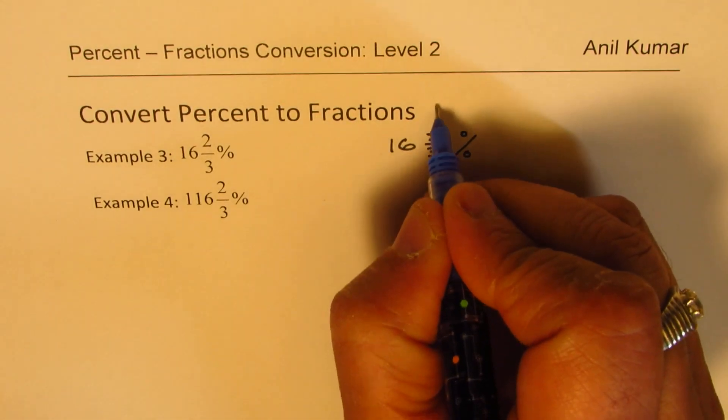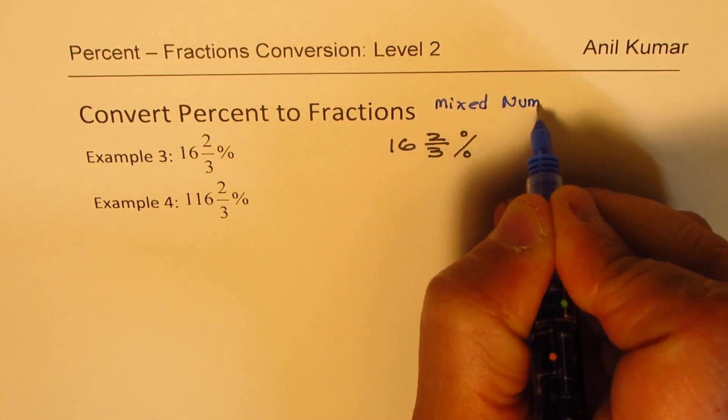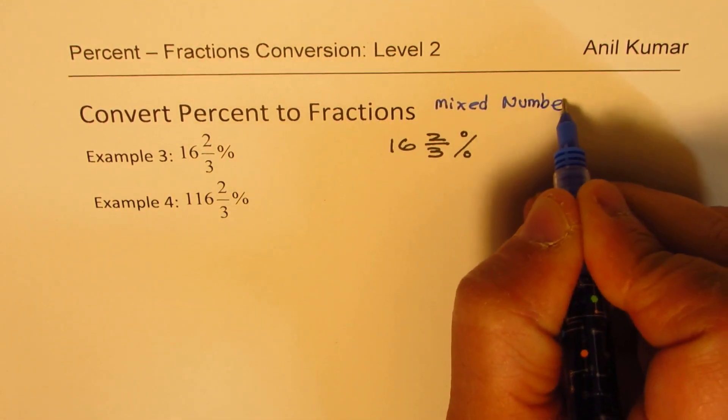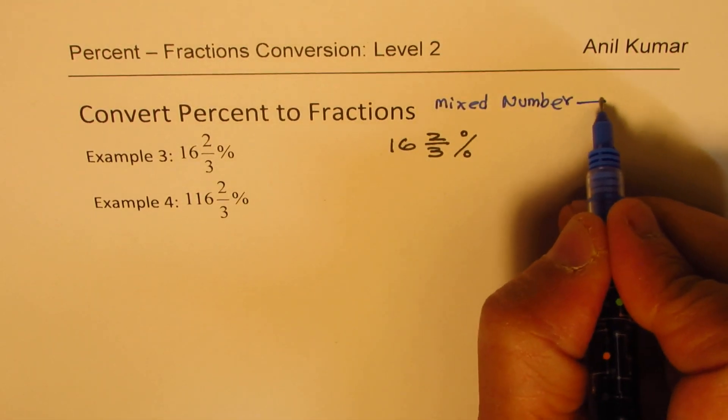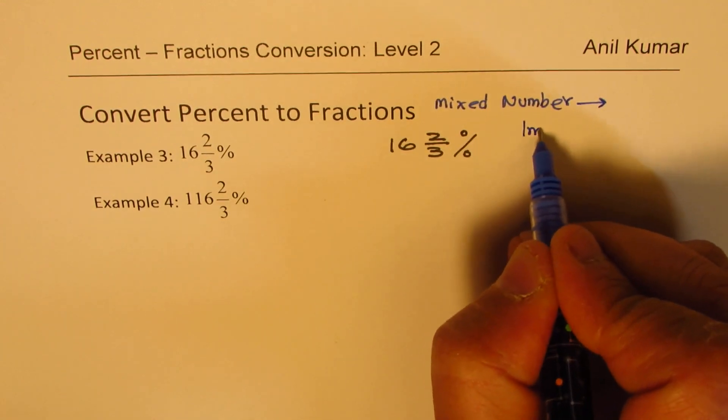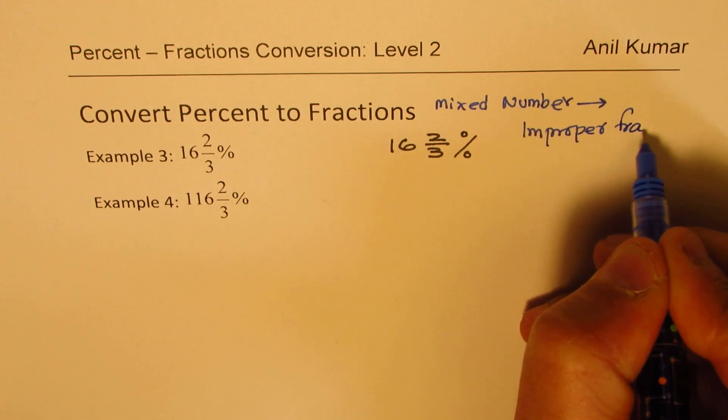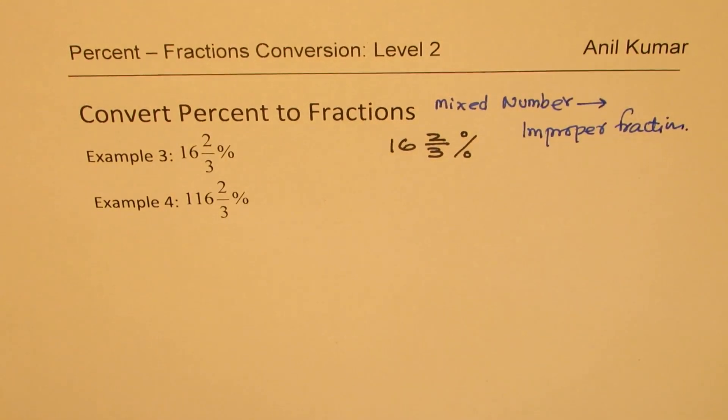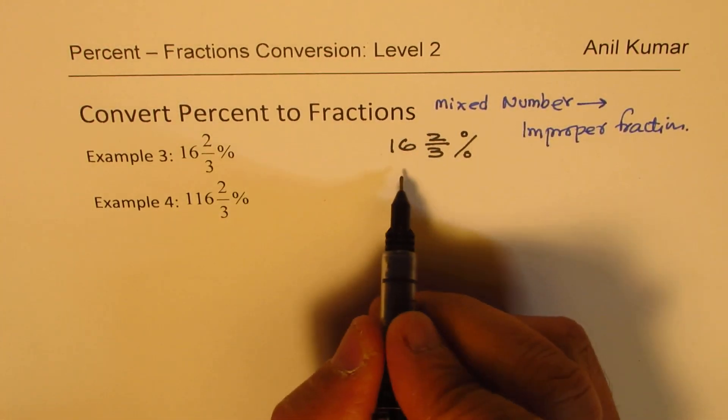Well, in this case, let me add one more step. We can also write this as an improper fraction. So this is a mixed number. Last time, we converted that to decimals. This time, our approach is slightly different. We'll convert mixed number to improper fraction. Okay? So that is our first step now. Changed it a bit. Instead of doing decimals, we'll do with improper fraction.